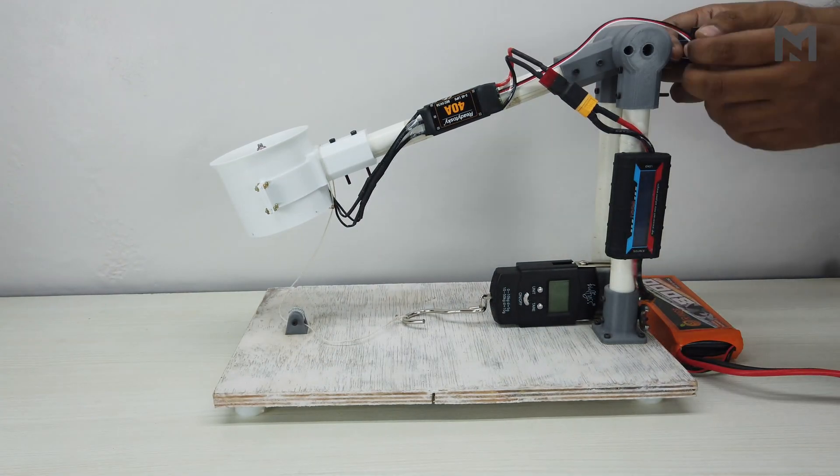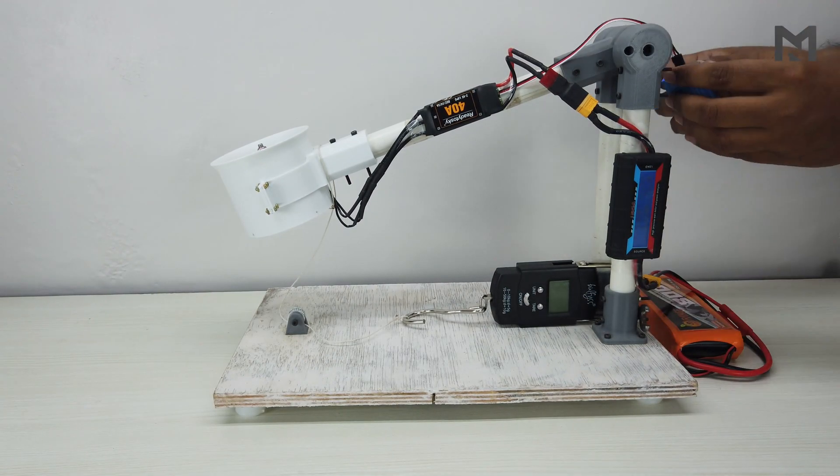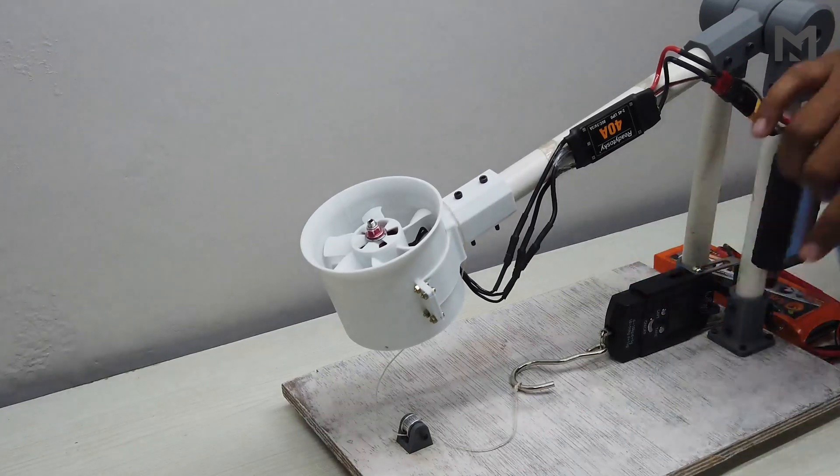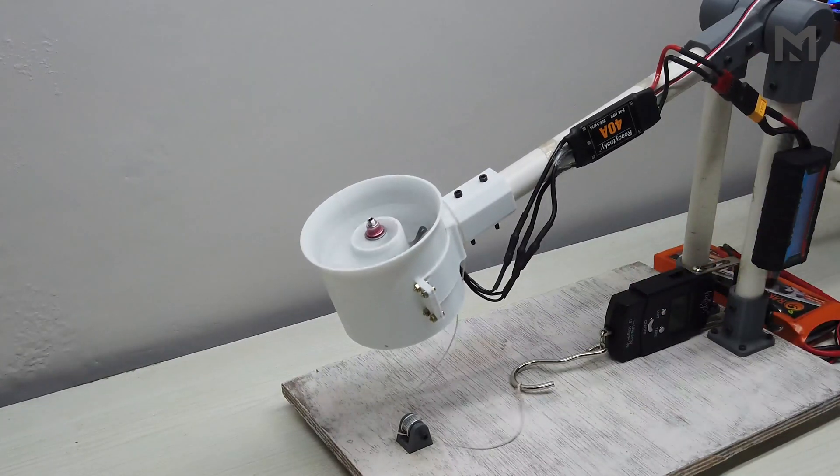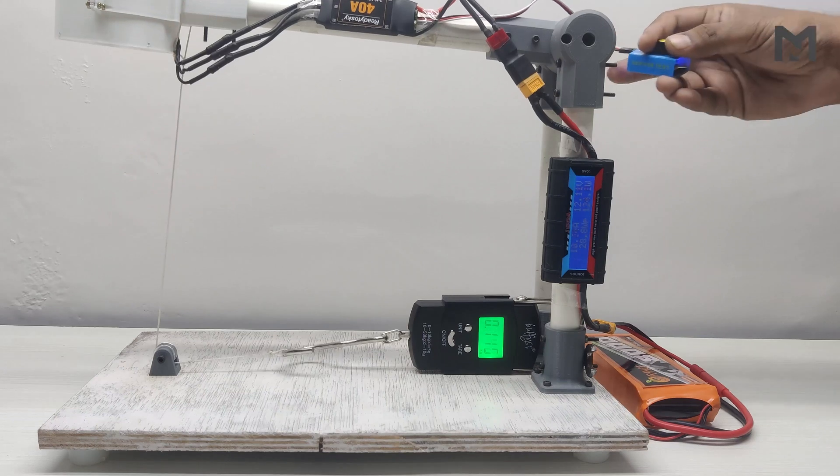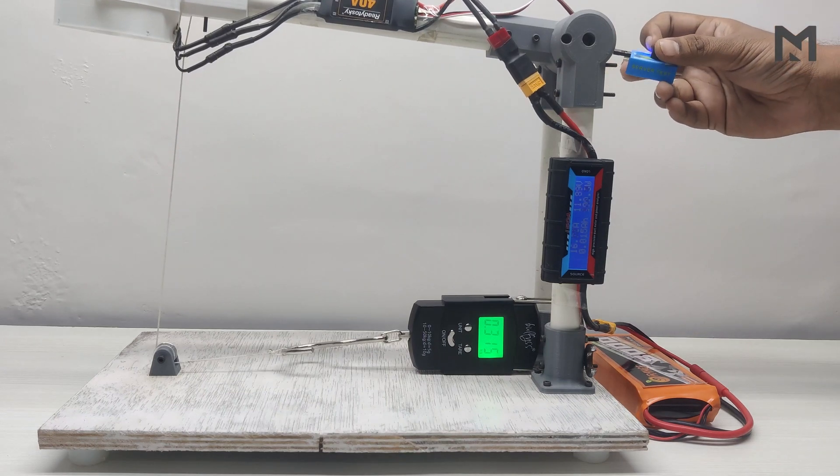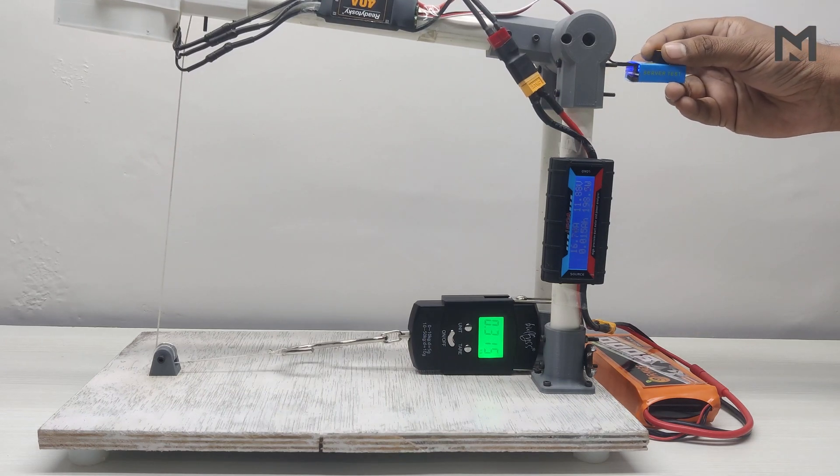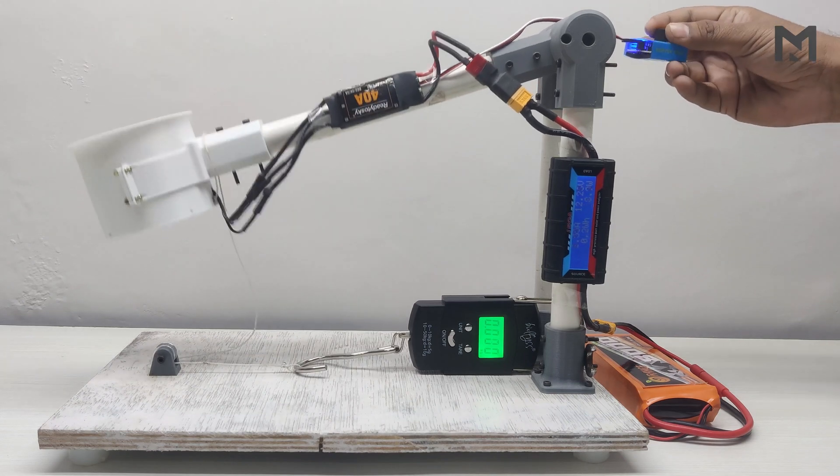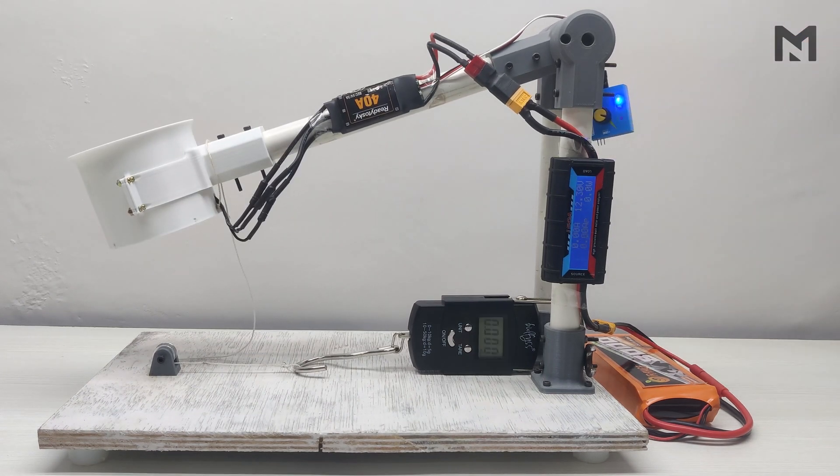Now connect the servo tester and attach the battery. Now start the throttle using the servo tester. We get a maximum thrust of 315g.